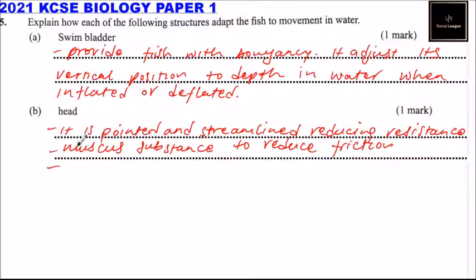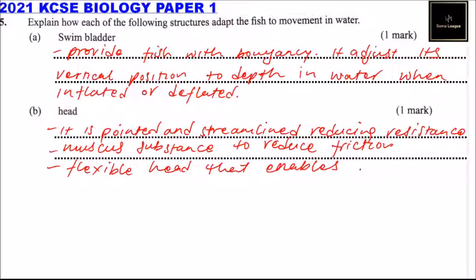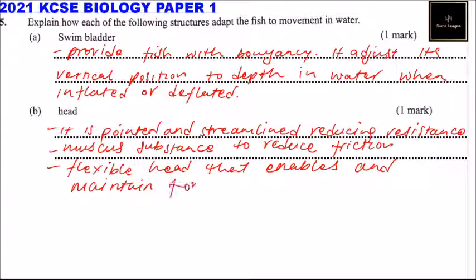Another adaptation is the flexible body, which enables and maintains forward movement. So those are the ways these parts of the fish are adapted to make the movement of fish in water possible.